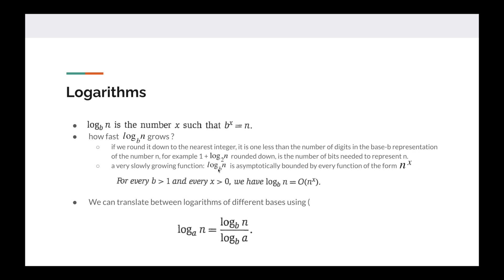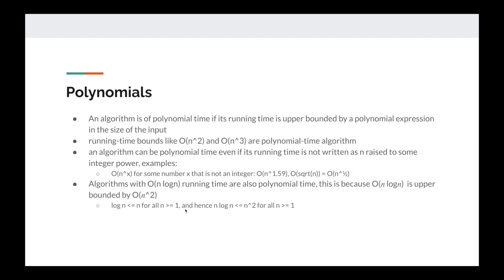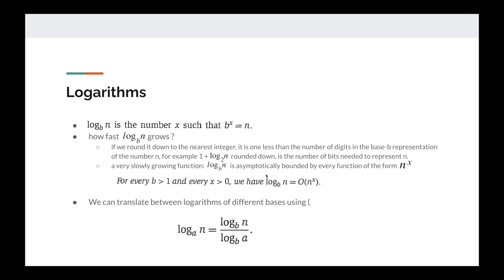One thing to note is that log_b(n) is asymptotically bounded by every function of the form n^x. This means logarithmic functions are asymptotically bounded by every polynomial. You can show this similarly to the n log n example — you can find a constant such that the logarithm is smaller or equal to some c·g(n) where g(n) is a polynomial. So keep in mind that log_b(n) is upper bounded by every polynomial.